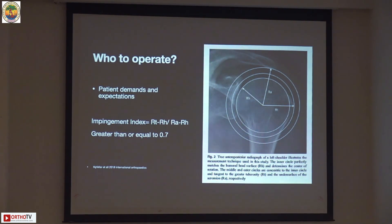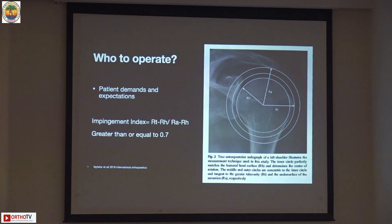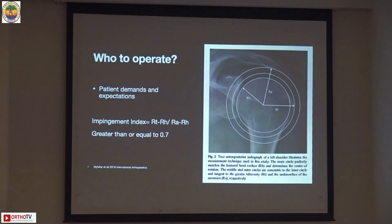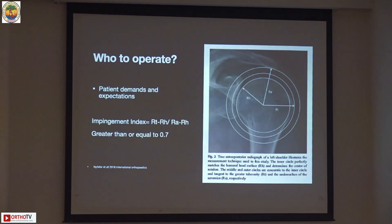There is a paper by — I'm sorry, I can't say the name very well — Kneifel et al., in which they came up with the impingement index. It's really simple to apply if you read the paper; they explain every single step of how to take a simple AP x-ray. It is performed in 30 degrees of external rotation.